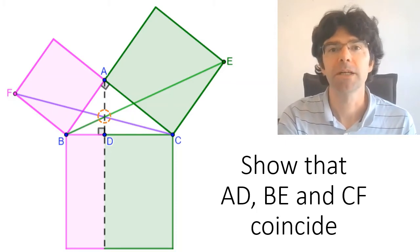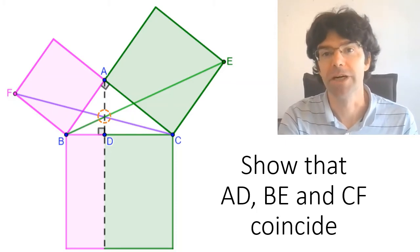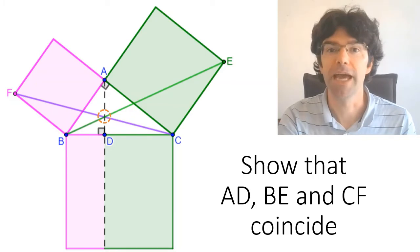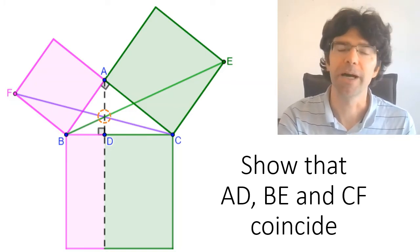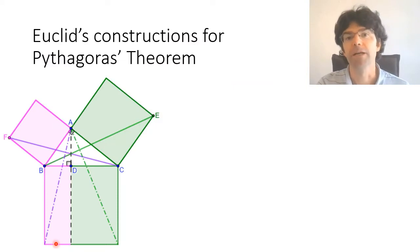We've got our right angle triangle, we've got our squares on the three sides, and Pythagoras theorem states that the area of the two small squares adds up to that of the large square. Now to prove that, Euclid adds various lines to the diagram: the perpendicular from A that divides the large square into two rectangles, and for each of the small squares, a pair of oblique lines that create some congruent triangles which Euclid used to show that the rectangles correspond to the small squares.